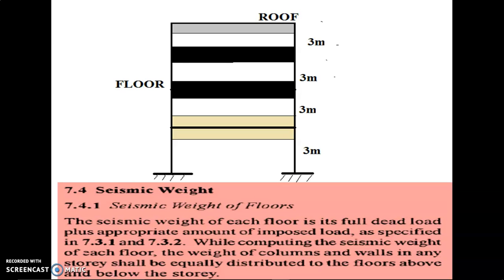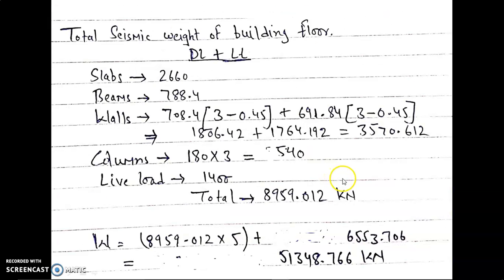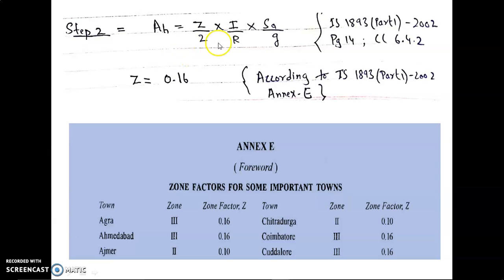Now we have to solve for base shear. The formula is VB = AH × W. In our previous lecture we already defined the total seismic weight as 51,348.766 kN. Now we have to find the AH value using the formula: AH = (Z/2) × (I/R) × (SA/G). This formula is given in IS 1893 Part 1, 2002, at page 14.